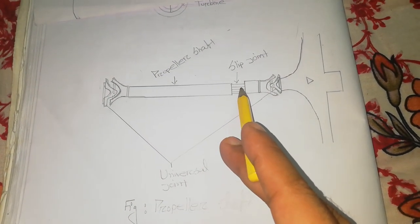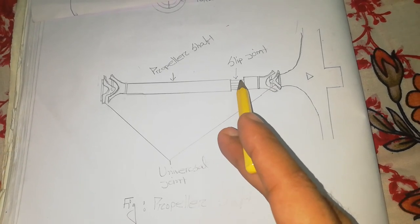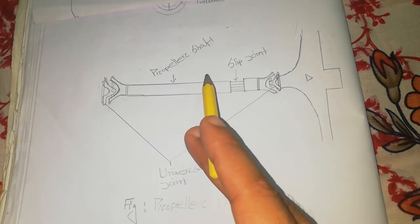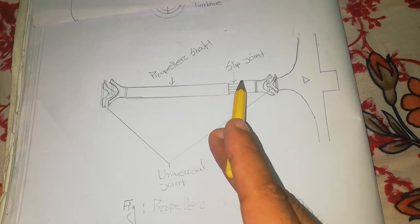Now let's look at the slip joint. This slip joint will be at the top and allows the propeller shaft to adjust its length.